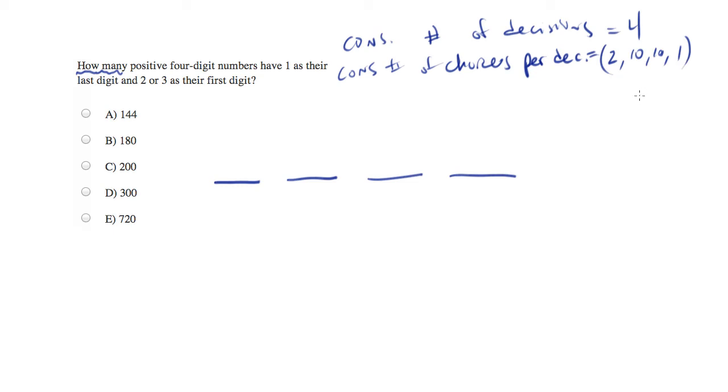No matter what you pick for any of these choices, you always make all the other decisions, and you always have the same number of choices for each decision.